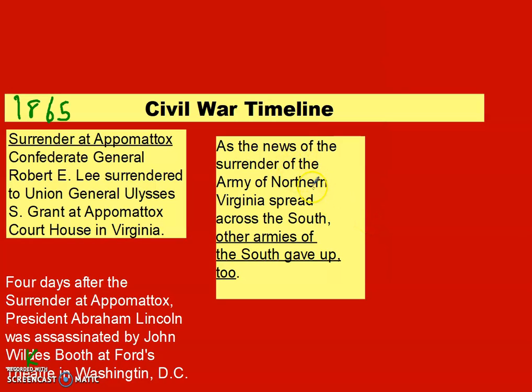As news of the surrender of the Army of Northern Virginia spread across the South, other armies of the South gave up too. Every state had their own army, and the Confederacy in Virginia was the first to surrender. After they heard the news — it took a long time to get news from place to place — the other armies in other states also surrendered at different battlefields. Then we start with putting the Confederacy and the Union back together into the United States of America.